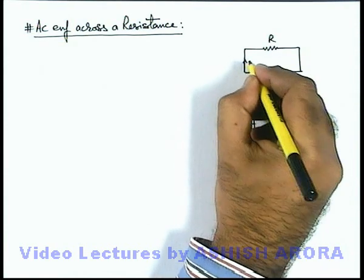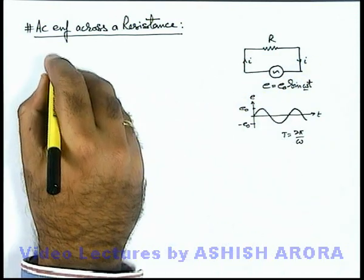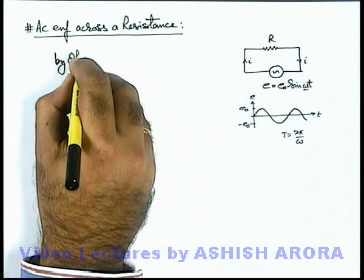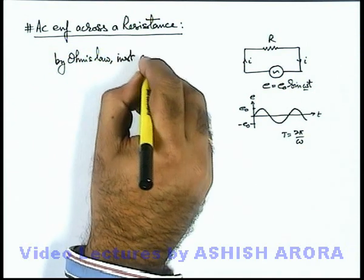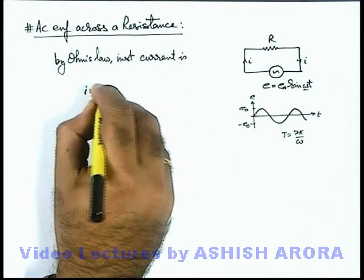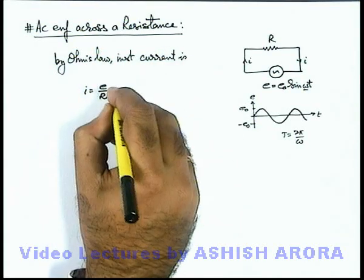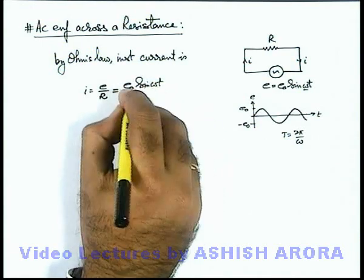And in this situation, at any instant if we denote the direction of current, we can directly write by Ohm's law instantaneous current is here. Current we can simply write as E by R, which can be written as E naught sine of omega t by R.